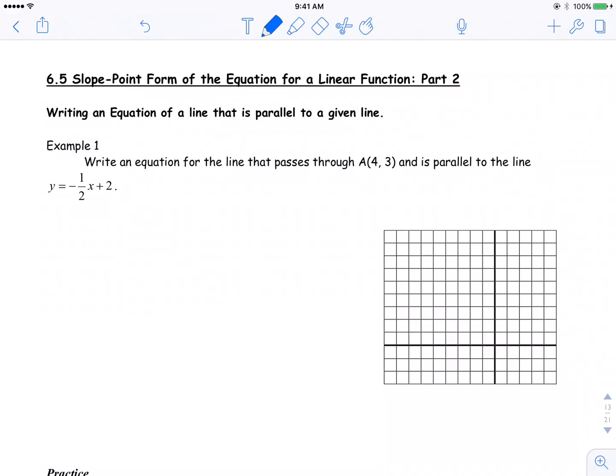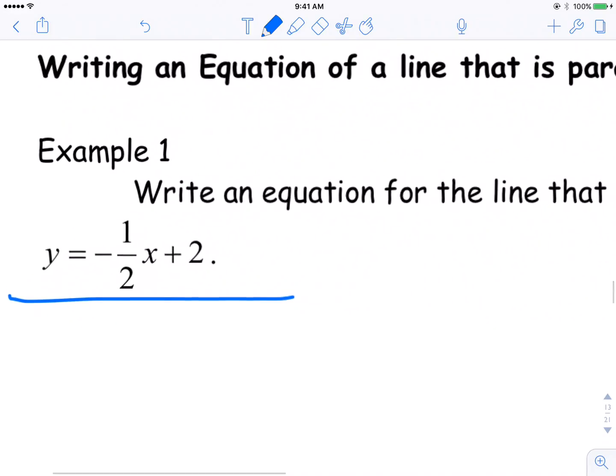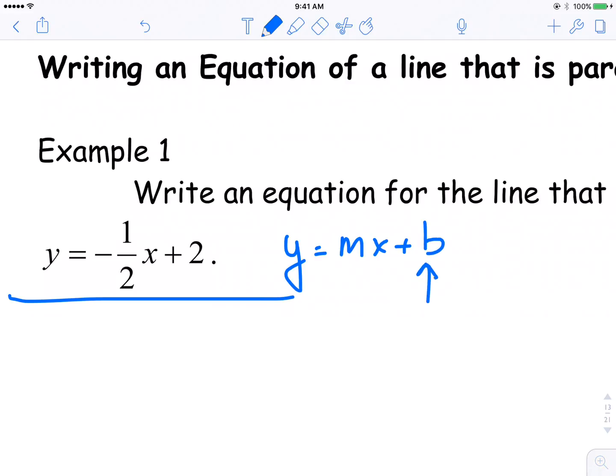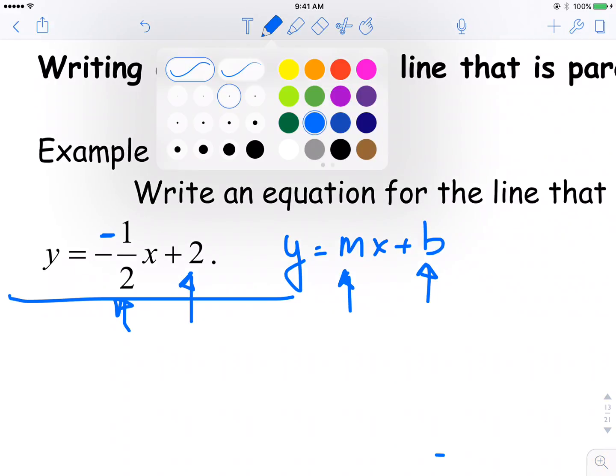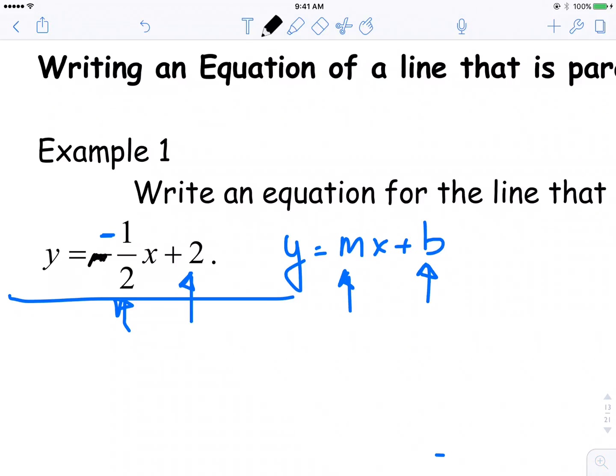Very simply, I would graph this line. Remember, this line is in the form of y equals mx plus b, where b is our y-intercept and m is our slope. And remember, I always tend to put the negative sign up above with the 1, just to alleviate any confusion that I may come across later.